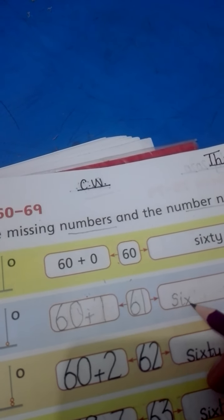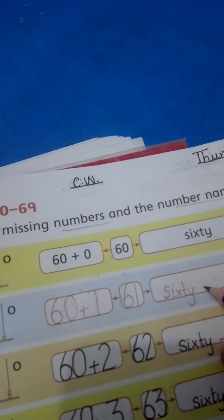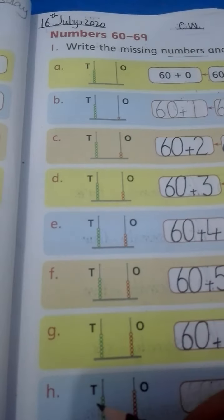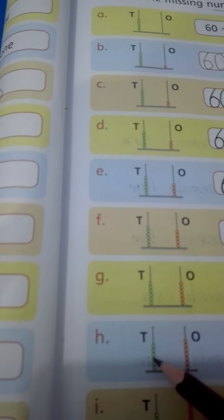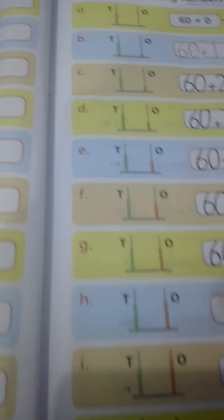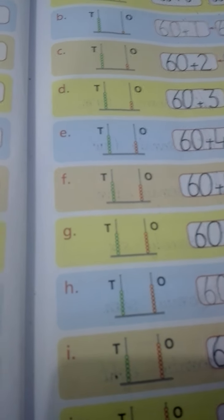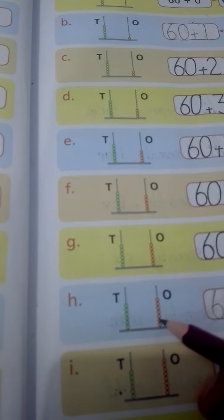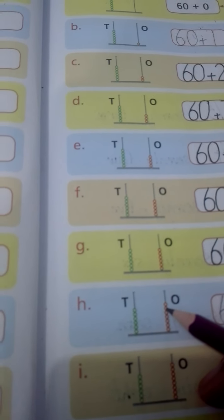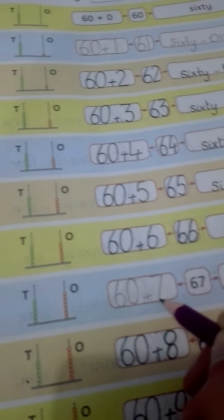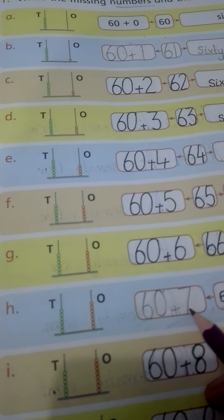Now we write in number names, in English counting using small letters: S-I-X-T-Y (60). Question H: count tens beads - 10, 20, 30, 40, 50, 60. Write 60 in the box, add the addition sign. Count ones beads: 1, 2, 3, 4, 5, 6, 7. Write 7 in the box. 60 plus 7 equals 67.